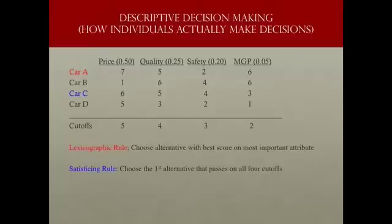For example, if I were to implement the lexicographic rule, this would work as follows. I would look at the most important attribute. In this case, it's price because it has the highest weight. And I would choose that alternative that scores the highest on that attribute. In this case, it's car A, it scores a seven. And so I would choose car A.